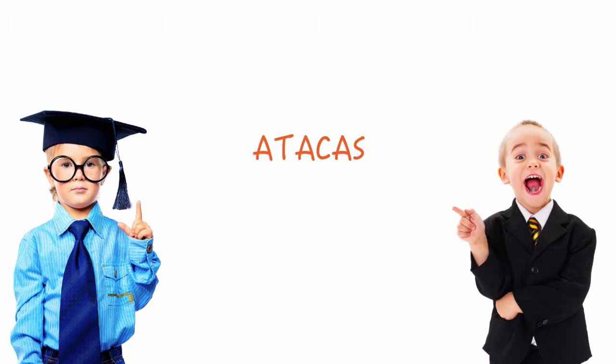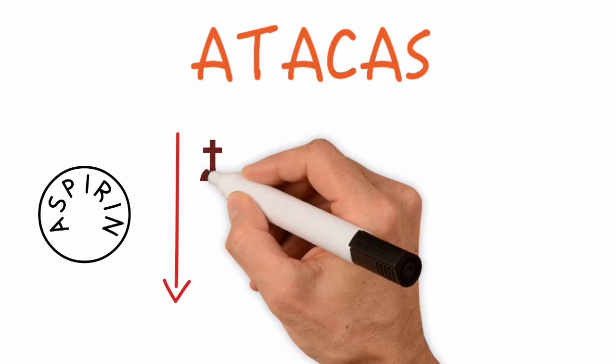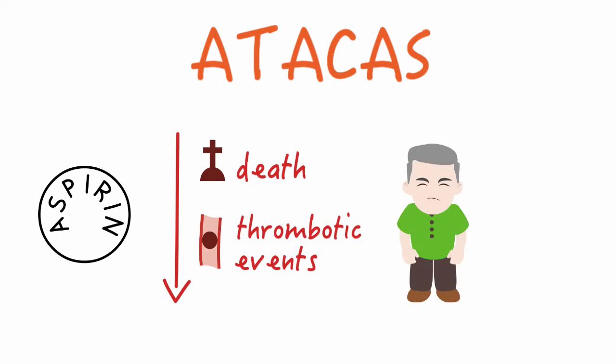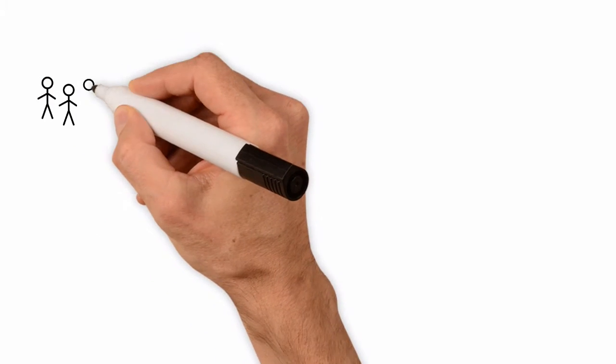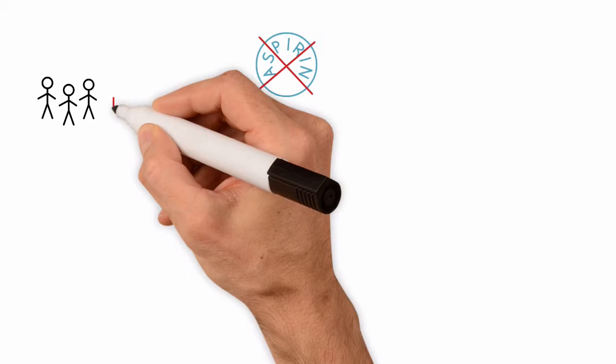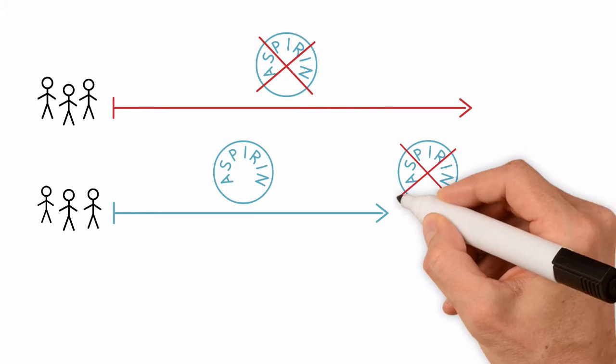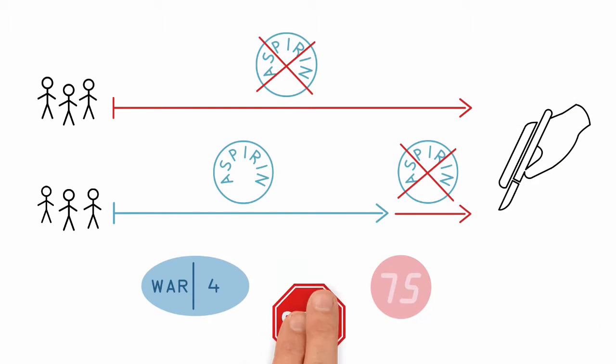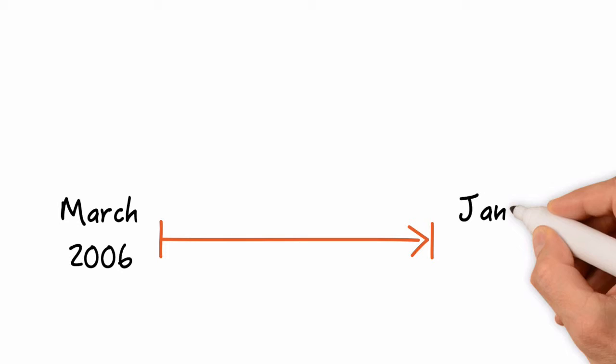That's where the ATACAS trial came into the picture. It was intended to answer the question if aspirin would reduce the occurrence of death and thrombotic events in patients who are at increased risk of major complications undergoing CABG surgery. Patients were eligible if they had not been taking aspirin regularly before the trial or had stopped taking aspirin at least four days before CABG surgery. Warfarin and clopidogrel had to be stopped at least seven days before surgery. The trial was carried out between March 2006 and January 2013.